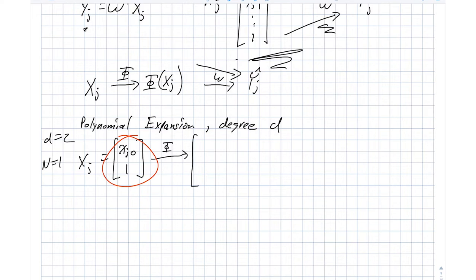So in this case, that is xj0 squared, xj0 the linear term, and then a 1 here. So that's relatively straightforward.